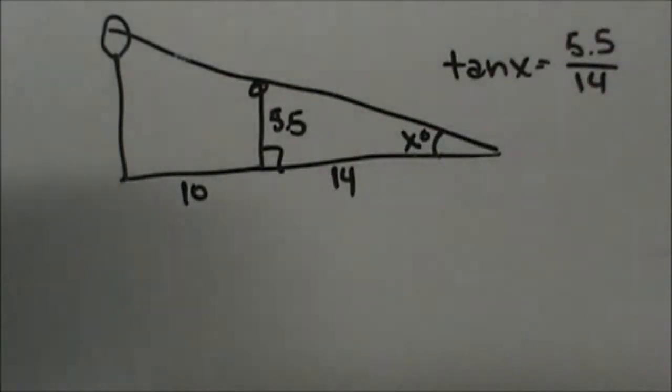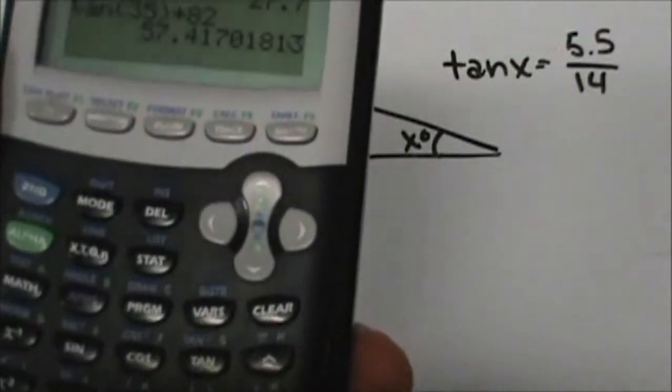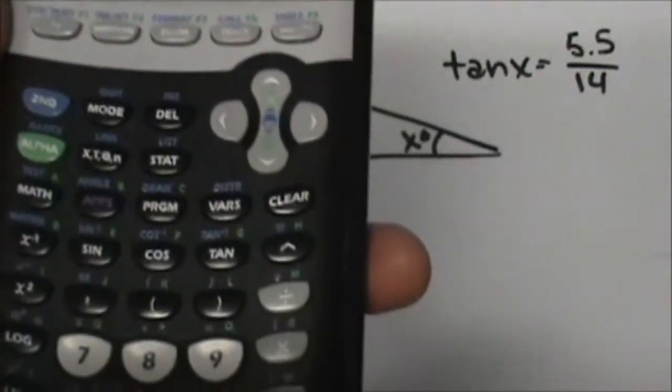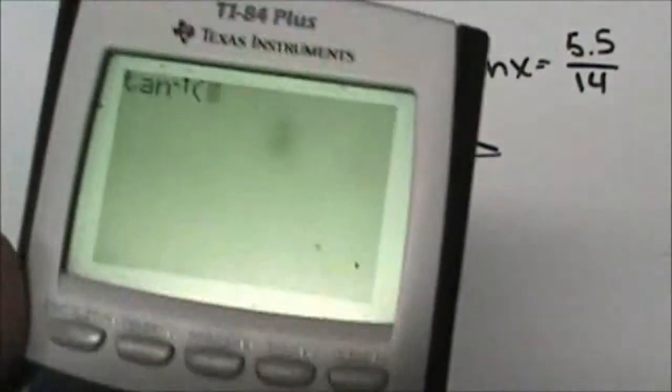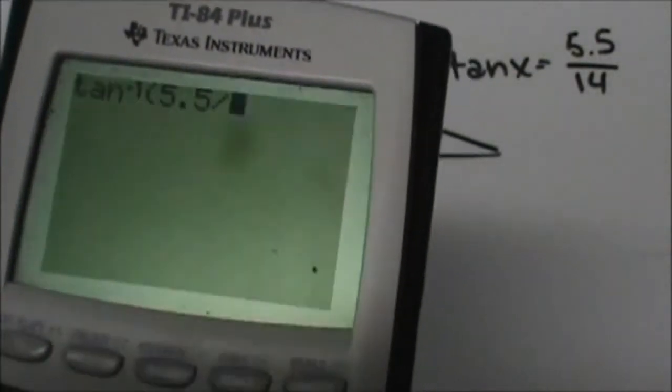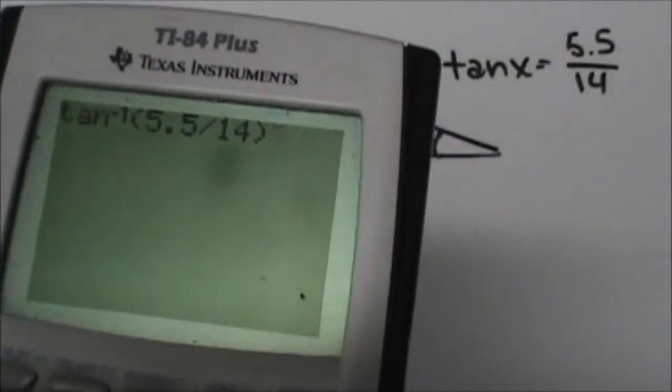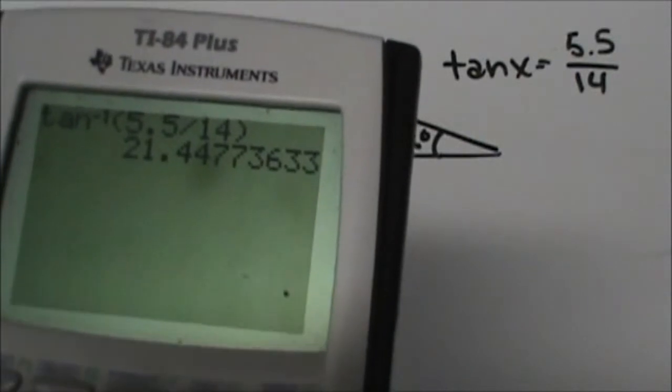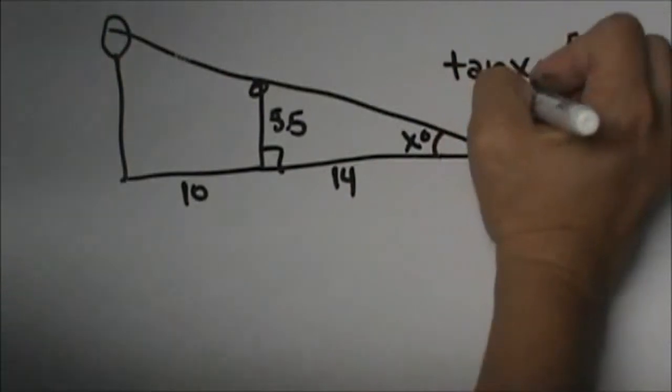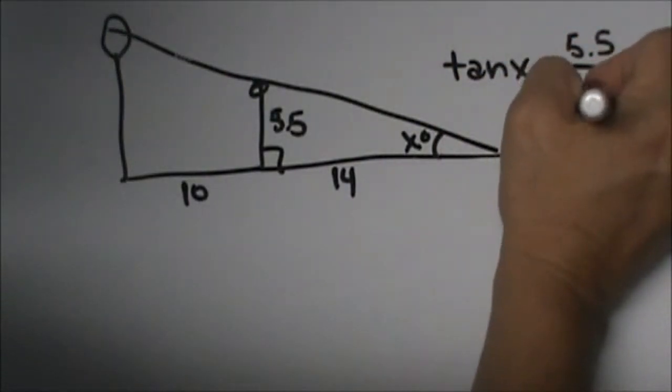Since we're solving for an angle, what do we know we have to do? We have to use our inverse button, so we're going to use the inverse tangent of 5.5 divided by 14. We get the angle measure of 21.4, or we'll just round it to 21, that's your closest whole number. So the angle measure is 21 degrees.